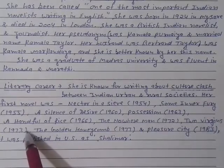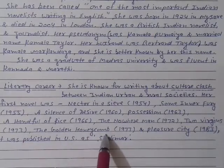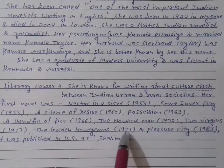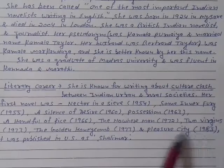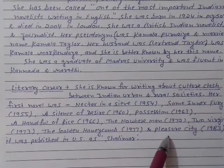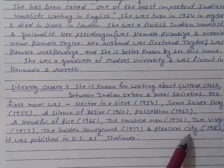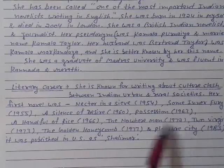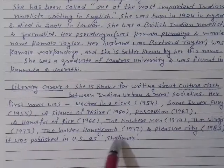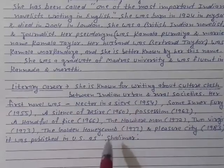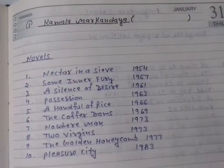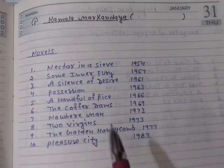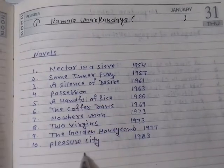Other novels by Kamala Markandaya include 'Two Virgins' in 1972, 'To Visit' in 1973, and 'The Golden Honeycomb' published in 1977. In 1983, the novel was titled 'Pleasure City,' but when it was published in the US it was given the title 'Shalimar.' This covers the literary career of Kamala Markandaya — you can look at all the novel titles here.